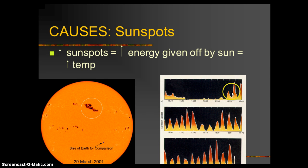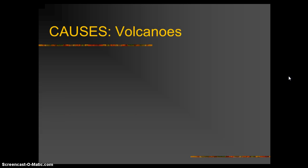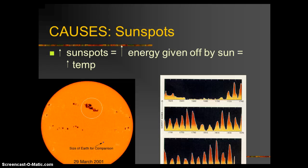Every 11 years there's a peak — it's a shorter scale but still something you can't ignore. The opposite would also be true: if there were less sunspots, there'd be less energy and lower temperatures.